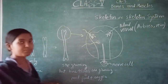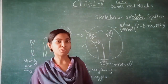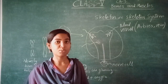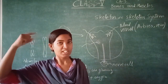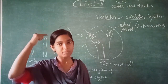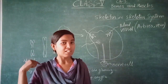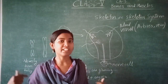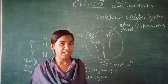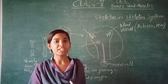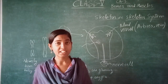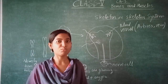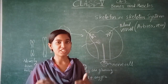Now we will see one by one the bones present in our human body. Starting from the head bone, then the hand bone, then the backbone, then the breast bone, and then the leg bone. We will see how many bones are present in each of these.